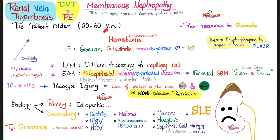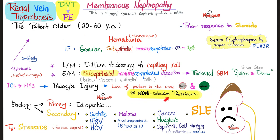Now let's talk about membranous nephropathy. The patient is older. The response to steroids is not so good. This disease is notorious for causing all kinds of clots, including renal vein thrombosis and DVT, which can become pulmonary embolism. The renal vein thrombosis can propagate to the inferior vena cava, then the right atrium, right ventricle, pulmonary artery, and then it's in the lungs. This membranous nephropathy has serum anti-phospholipase A2 receptor antibody, or PLA2R antibody. If you do immunofluorescence, you'll see granular subepithelial immune complexes made of C3 and IgG. C3 is the complement, because the MAC — which is part of the complement — is attacking the podocytes. That's why you have proteinuria. You're losing albumin and globulin, and that's why it's non-selective proteinuria.